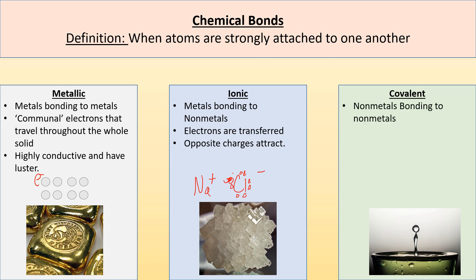Now covalent bonding usually occurs when nonmetals are bonded to other nonmetals. So in this case, electrons are being shared. So say for example, hydrogen has one valence electron and this hydrogen has another valence electron, and they go, hey, I'll share mine with you if you share yours with me. And then they end up with the amount of electrons that they want.